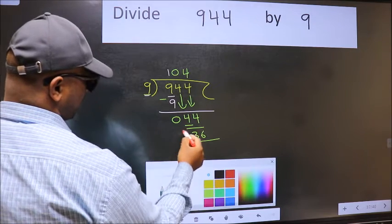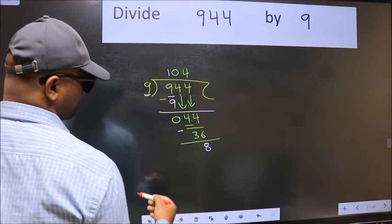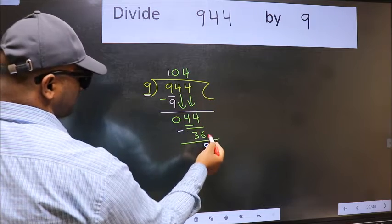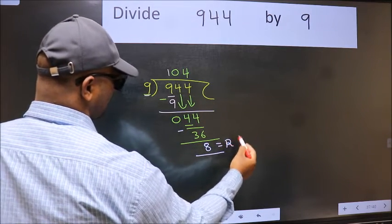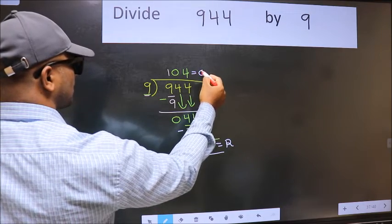Now we should subtract. We get 8. No more numbers to bring it down, so we stop here. This is our remainder and this is our quotient.